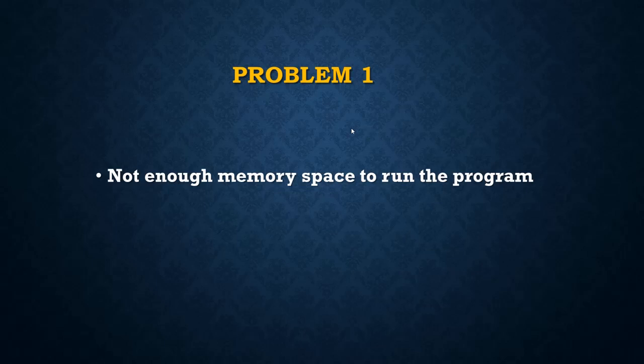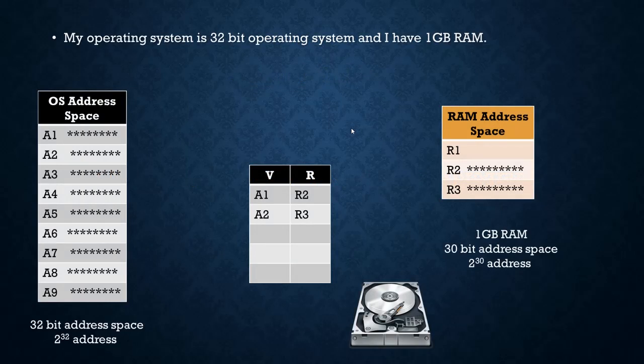First problem: not enough memory space to run the program. Let's say I have a 32-bit address space, meaning I have 2 to the power 32 addresses. My physical address is 1GB, meaning I have 2 to the power 30 addresses. My page table entry is 3, and there is a hard disk. Already A1 and A2 are mapped into R2 and R3. Now I am going to load A3, which loads into R1. My RAM capacity is already over.